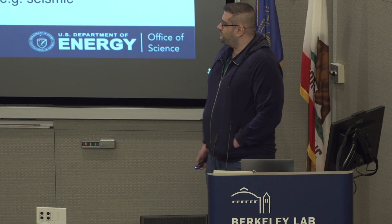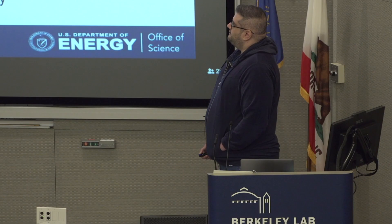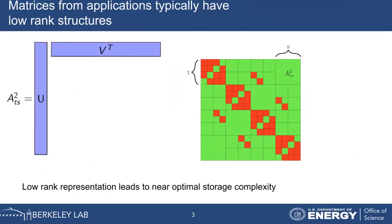We have all these large, dense matrices, and we can't really work with them directly, but we can exploit their data sparsity. There are large sets of blocks within the matrix that can be well approximated using a low rank form. For example, this matrix here, ATS, can be represented in terms of the outer product of two tall and skinny matrices, U and V transpose. The number of columns in U and the number of rows in V transpose are typically quite small compared to the dimension of that block. We call that rank K.